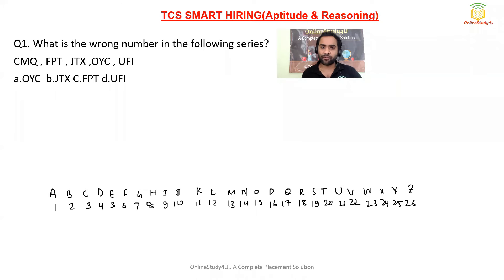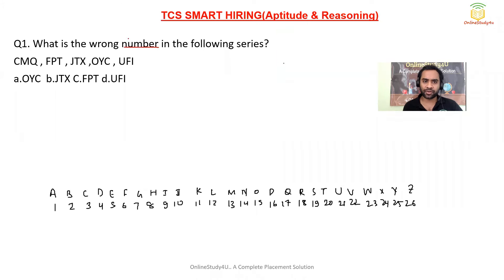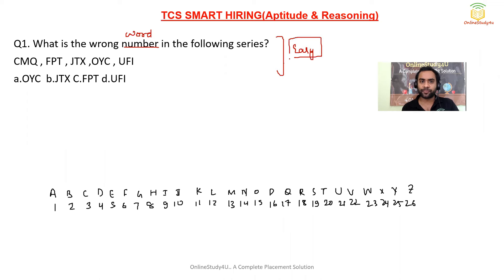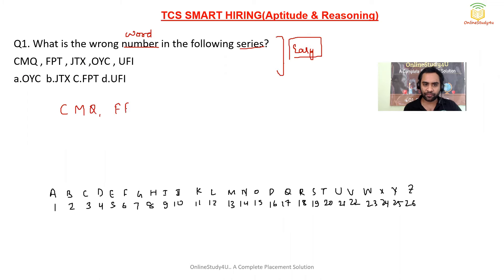Question number one: what is the wrong word in the series? If the question asks for a missing number or word, that's easier, but finding the wrong word is more difficult. The series given is: CMQ, FPT, JTX, OIC, and UFI. We need to find which is the wrong word in this series.